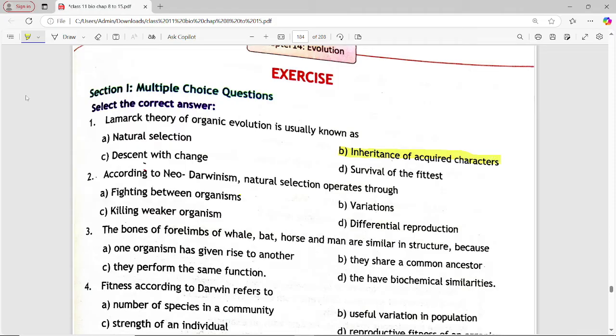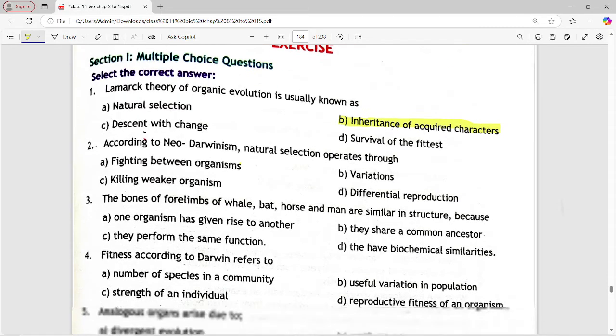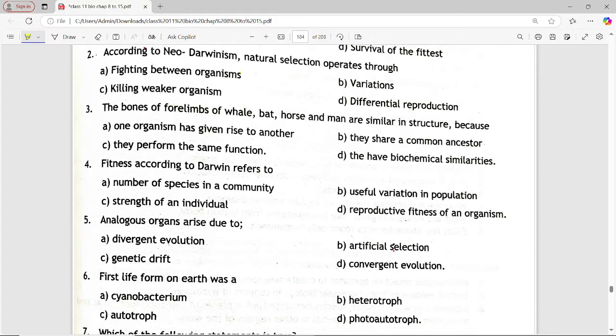Next is, according to neo-darwinism, natural selection operates through. Options are, fighting between organism, variation, killing weaker organism, differential reproduction. Answer is option D, differential reproduction.